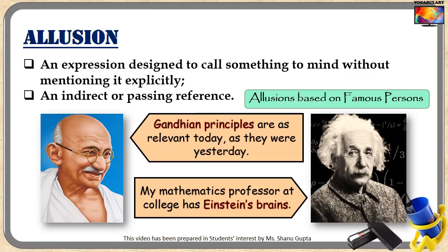So we see that allusion is a figure of speech that quickly stimulates different ideas and associations using only a couple of words. There is only one condition for an allusion to work as intended: you have to play upon a reference that is common knowledge and, more importantly, is known to your audience.